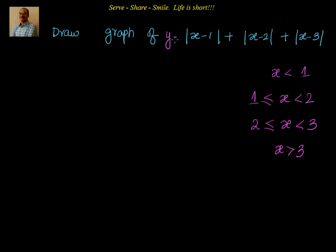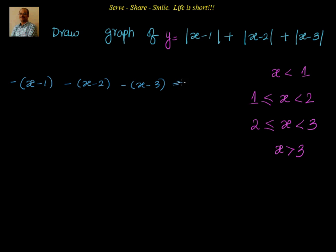Now let's look at the function. If x is less than 1, all these expressions inside the absolute values will be negative. So we write: y equals minus(x minus 1) plus minus(x minus 2) plus minus(x minus 3), which simplifies to 6 minus 3x.